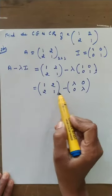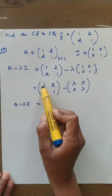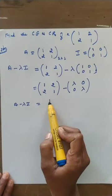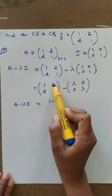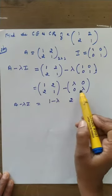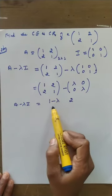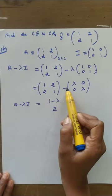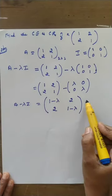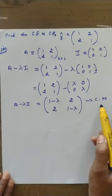Now subtract the two matrices. A minus lambda I equals: first row, 1 minus lambda and 2 minus 0 equals 2; second row, 2 minus 0 equals 2 and 1 minus lambda. This matrix is called the characteristic matrix.